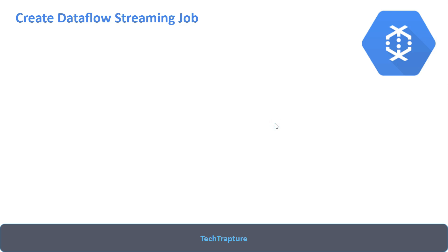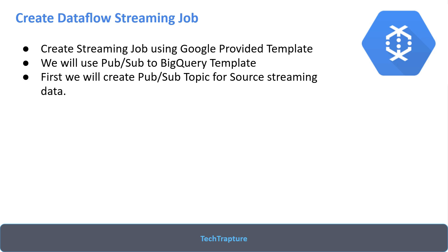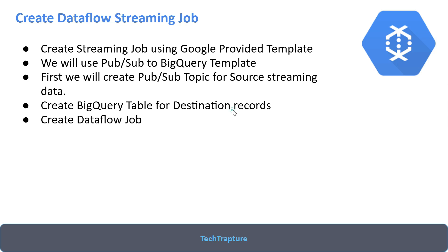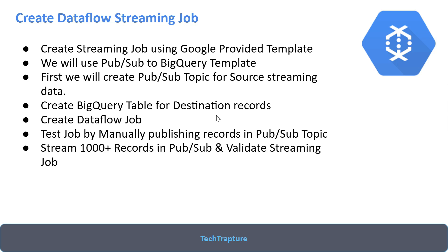Let's summarize what we are going to do in this video. We are going to use a Google provided template — the PubSub to BigQuery template. First we will create a PubSub topic for the source streaming data. Then for the destination we will create a BigQuery table. Then we will create a Dataflow streaming job which will keep running and listening for data, and we will look at the job in a running state. Then we will test the job by manually publishing one record in the PubSub topic and verify the data appears in BigQuery. Finally, we will stream a thousand-plus records into PubSub via a Python script at an interval of five to ten seconds and validate the streaming job.